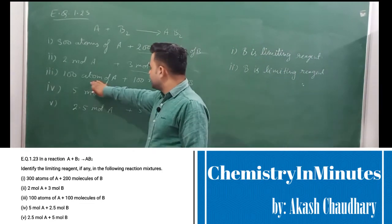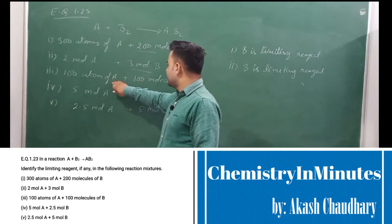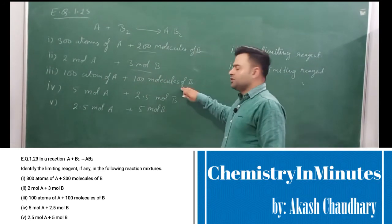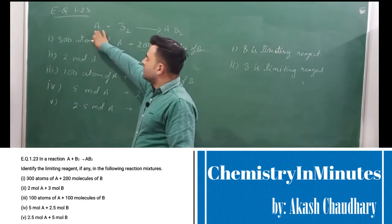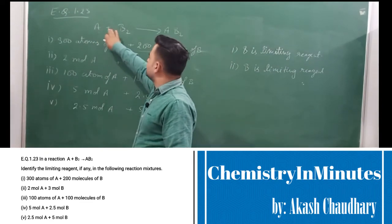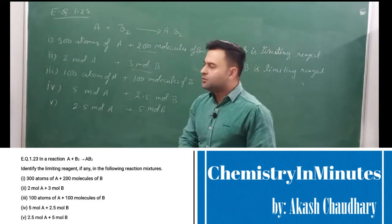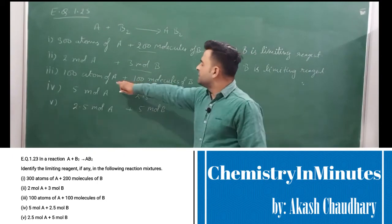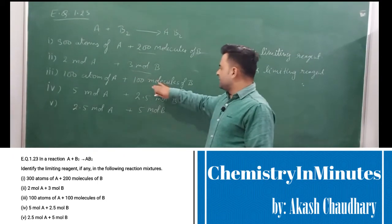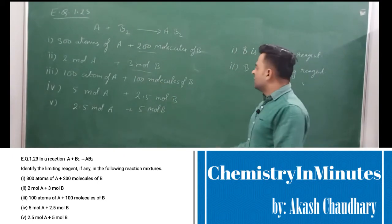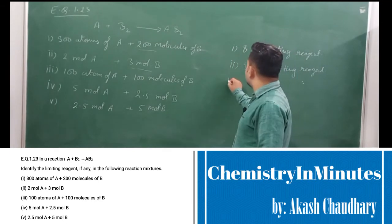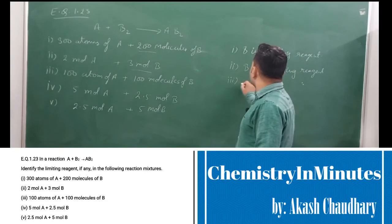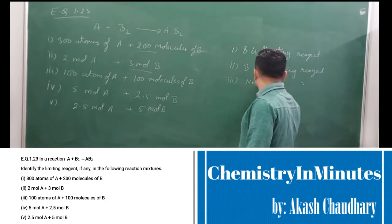In the third case, we have 100 atoms of A and 100 molecules of B₂. Since 1 atom of A reacts with 1 molecule of B₂, and we have 100 atoms of A and 100 molecules of B₂, this is a stoichiometric ratio. So there is no limiting reagent.